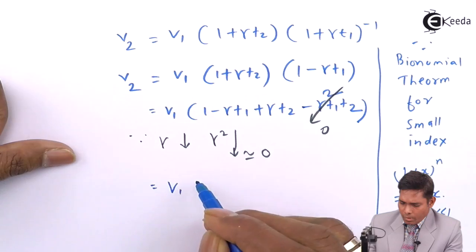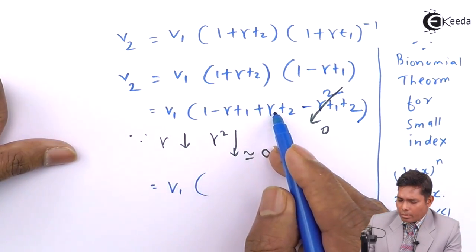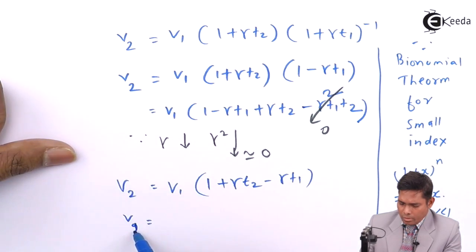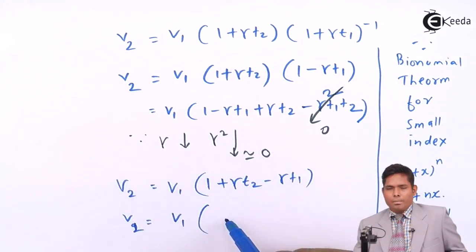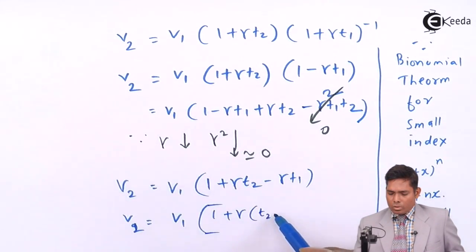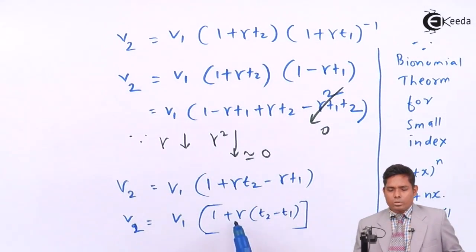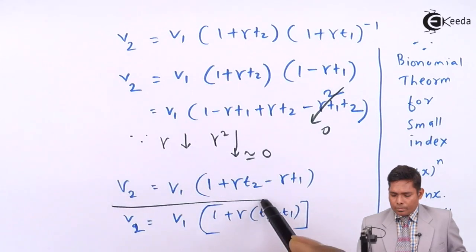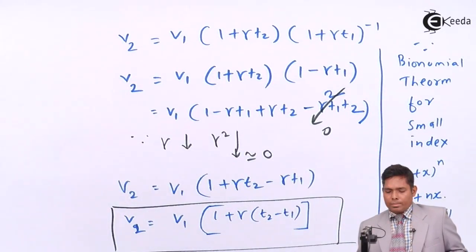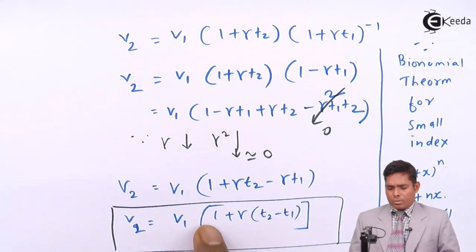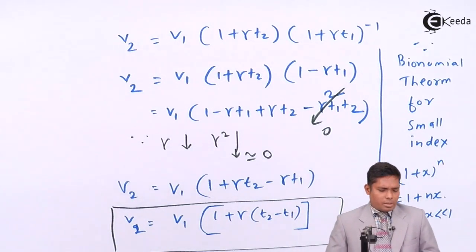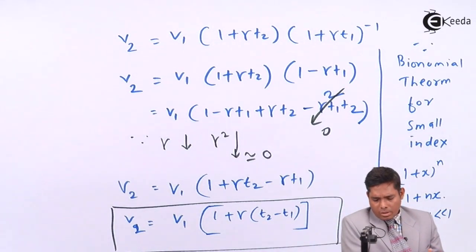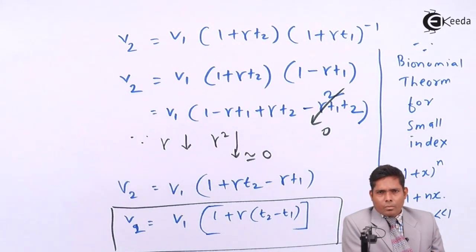After neglecting the higher-order term, we are left with V2 = V1(1 + γT2 - γT1). Taking γ common, this becomes V2 = V1(1 + γ(T2 - T1)). This is exactly the equation we were looking for. The final expression is V2 = V1(1 + γ(T2 - T1)), which means you can find the final volume when heating a metal slab from any temperature to any other temperature.